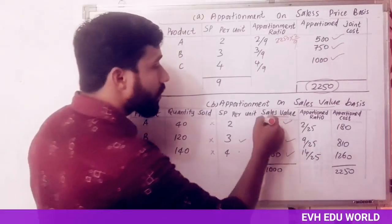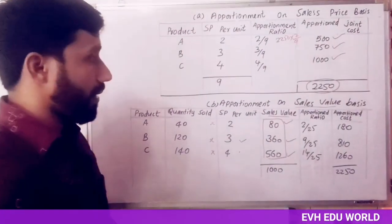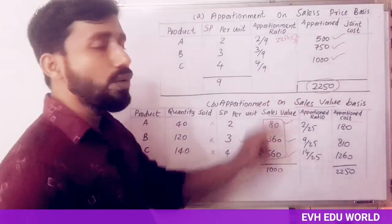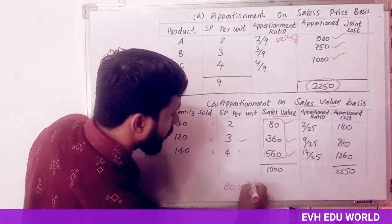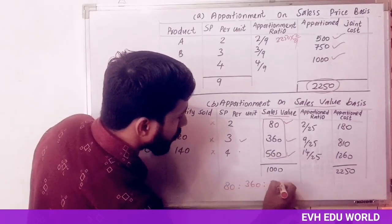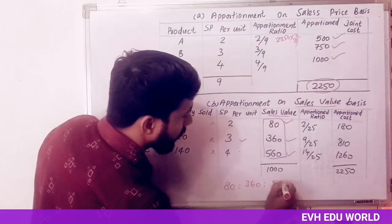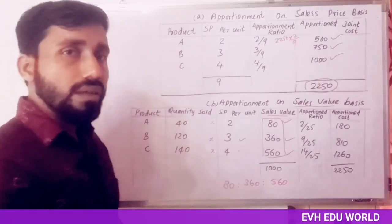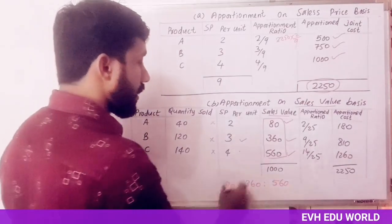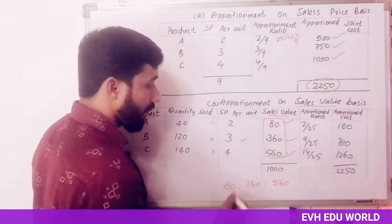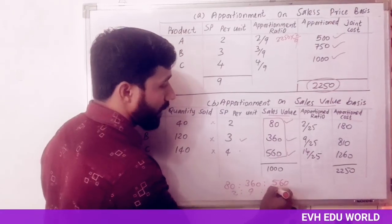The second method is the basis of sales value. The sales values are 80, 360, and 560 respectively. So the ratio is 80 : 360 : 560. How do we simplify this ratio? It simplifies to 2 : 9 : 14.